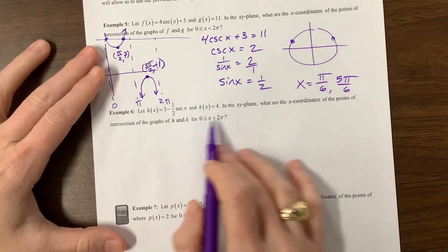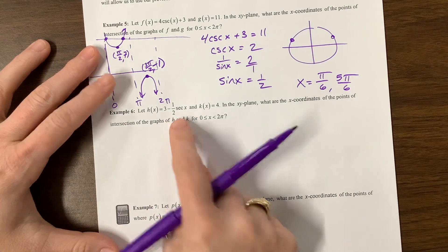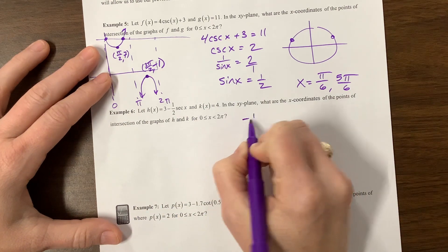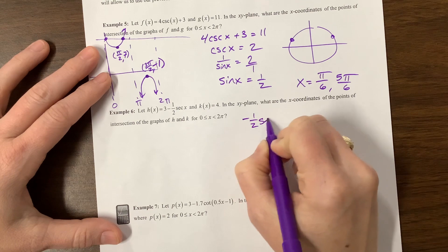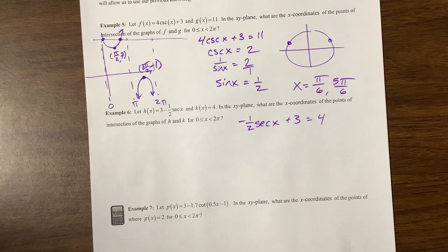Let's look at the next one. And on this one, oh, the negative 1 half. I'm going to write it this way: negative 1 half secant of x plus 3 equals 4.